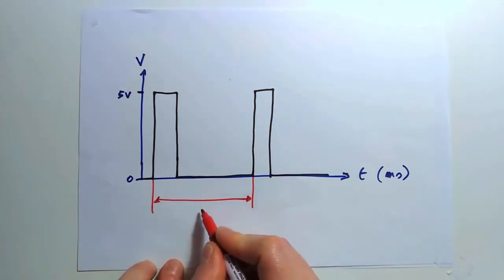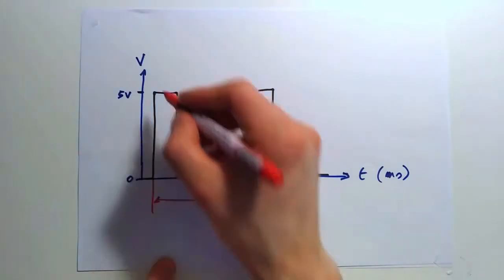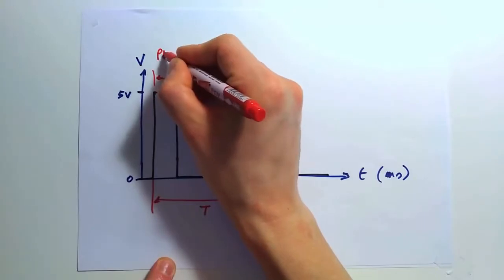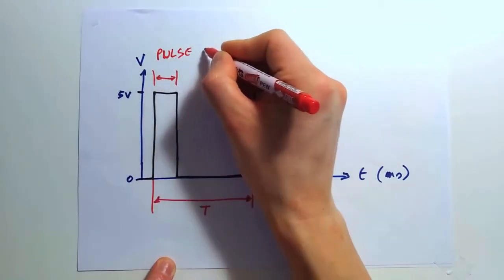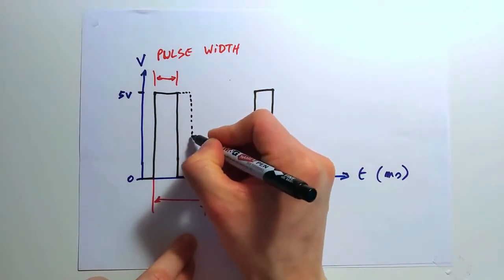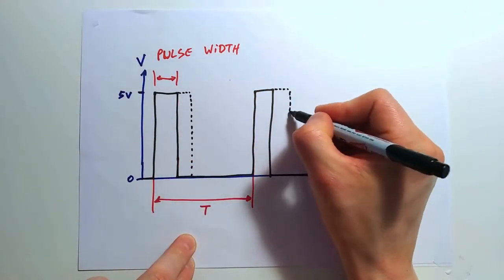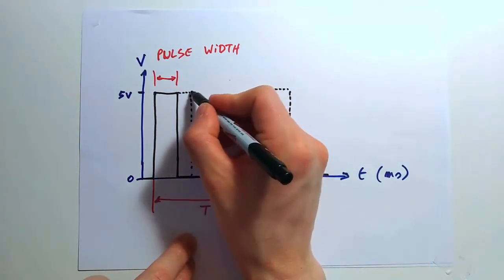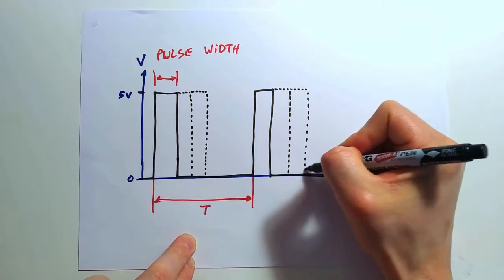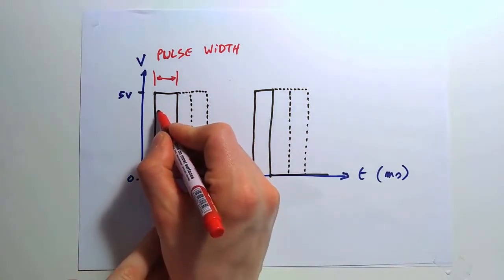Let's say we extend the pulse width. Or maybe even a bit longer. We now have changed, or modulated, the pulse width. In a servo, let's take a look at these repeating pulses. The pulse width here is 1 millisecond. The period for a standard servo is set at 20 milliseconds.